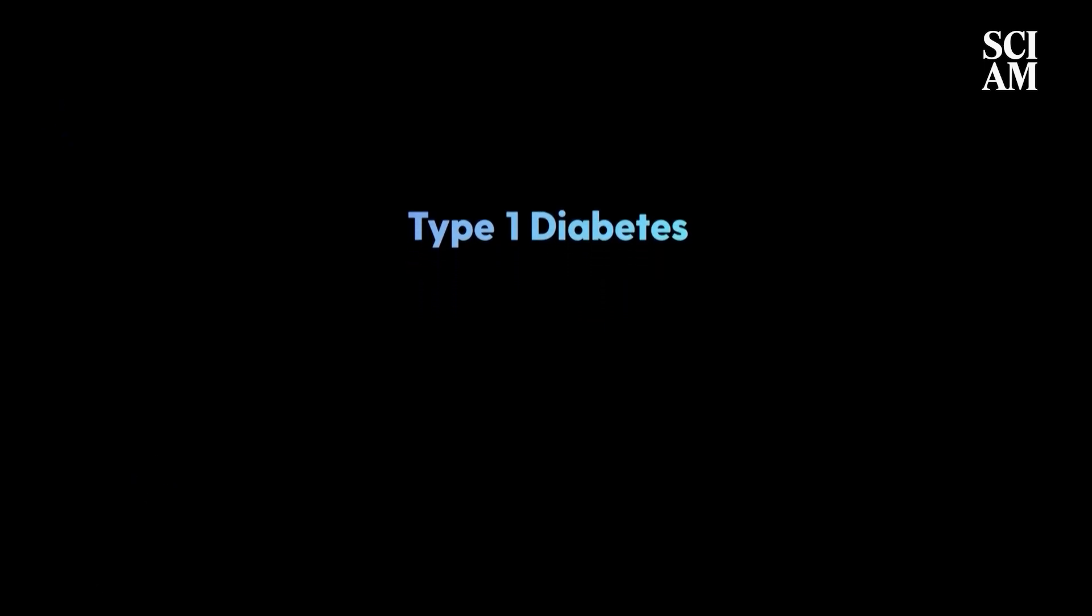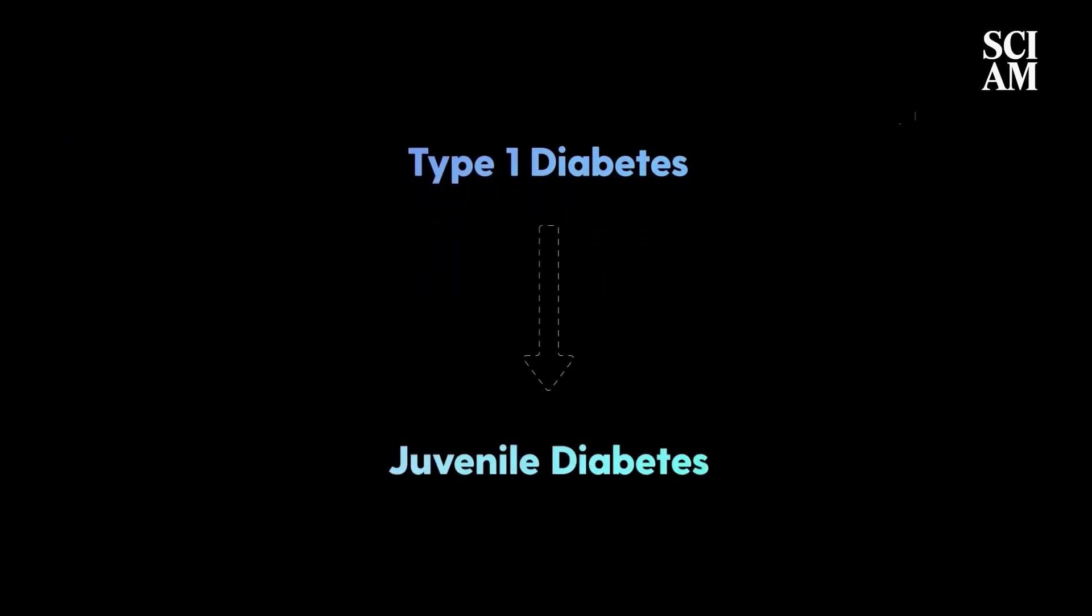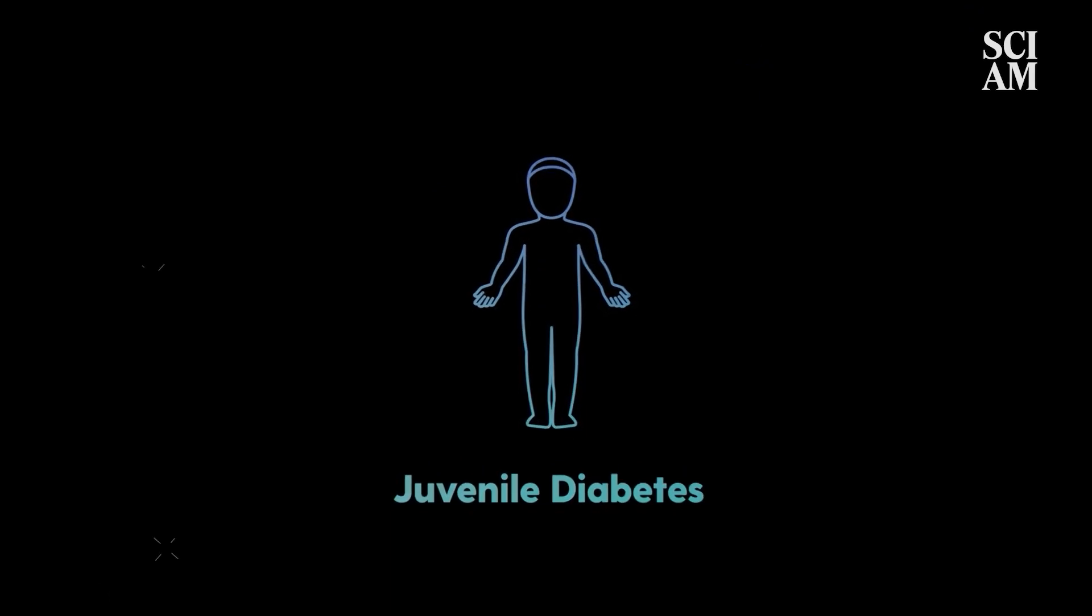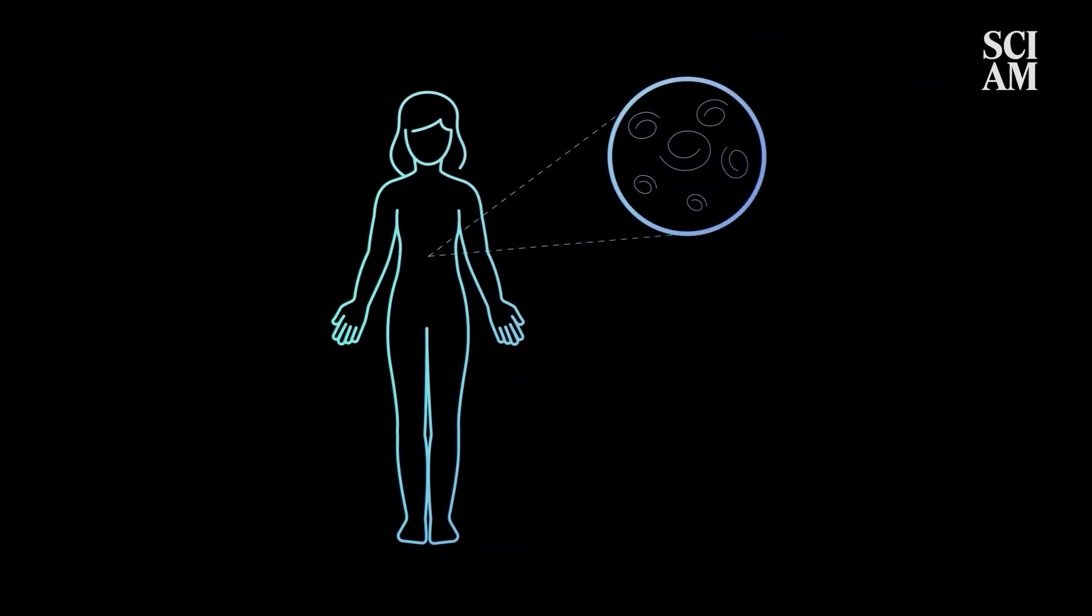Type 1 diabetes is sometimes called juvenile diabetes because it often makes its appearance in childhood or adolescence. While the exact cause is mysterious, we know the disease happens because immune cells target and attack insulin-producing cells in the pancreas, called beta cells. As those cells get destroyed, the body stops producing insulin and loses the key regulators of blood sugar levels.